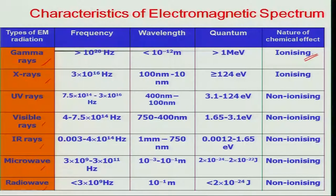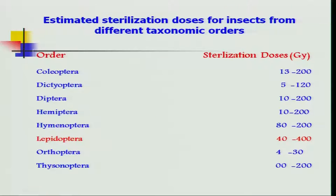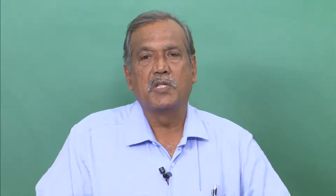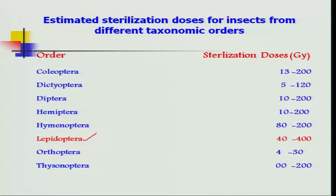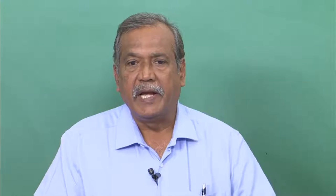The sterilization dosage required for insects belonging to different groups or orders varies considerably, and even within a group there is significant variation. For example, in the case of Lepidoptera, the sterilization dose — always expressed in gray — varies from 40 to 400. This means each species, even within Lepidoptera, needs to be individually worked out; some may need 80 gray, some 120 gray, and it must be standardized before practical application.